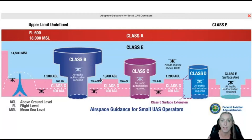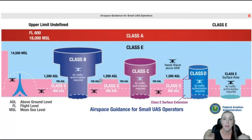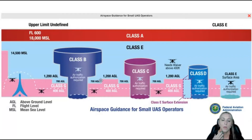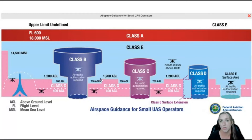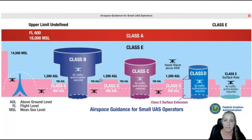Think of it sort of like our highway system here in the U.S., but it's 3D — because you can go forward and back, left and right, but you can also go up and down. This can be a tricky topic for a lot of people, but we are going to get you through it and feeling comfortable and confident being able to read these charts and decipher airspace in the National Airspace System.